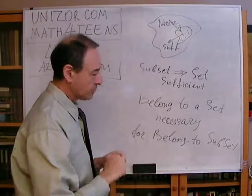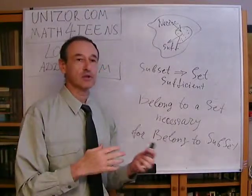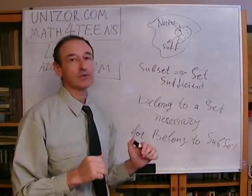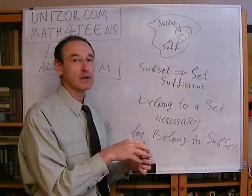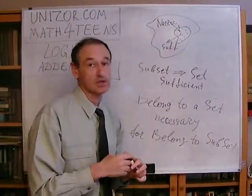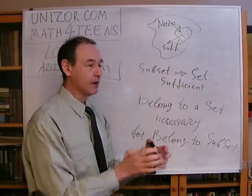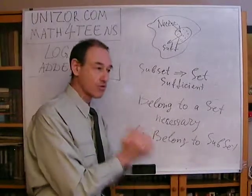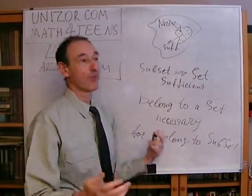Whenever you have a necessary and sufficient condition and don't know which is which, think about this geometrical representation. If you have proved something stronger, then that is the sufficient condition. Stronger means smaller in this particular case — you are narrowing down your logic to a more precise definition. It's stronger than saying something on a broader basis.